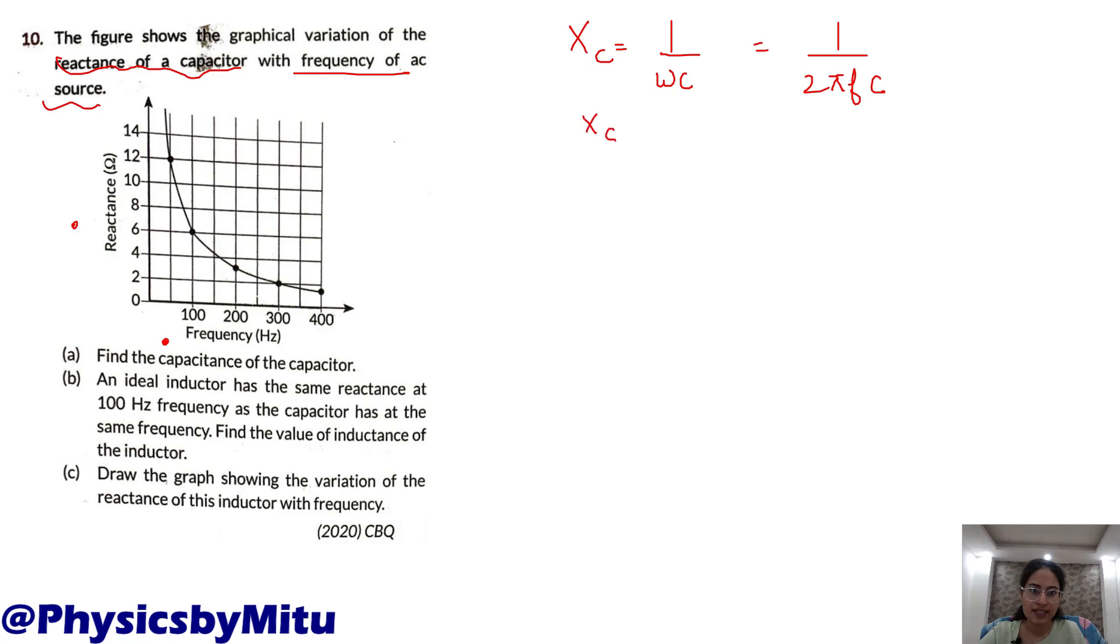So, omega is 2 pi f. You can see that Xc is inversely proportional to the frequency. Therefore, the graph should be like this. The shape of graph is like this.